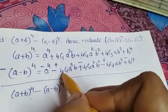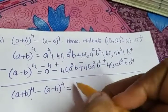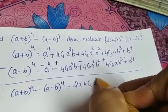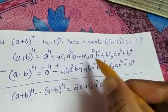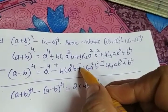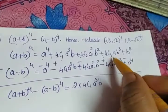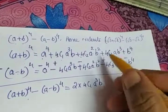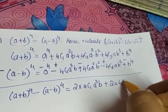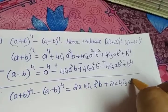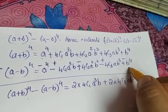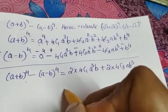4C1 a³b plus 4C1 a³b gives 2 × 4C1 a³b. The a²b² terms — one positive and one negative — get cancelled. The 4C3 ab³ terms are the same and add together giving 2 × 4C3 ab³. And b raised to 4 and minus b raised to 4 get cancelled.